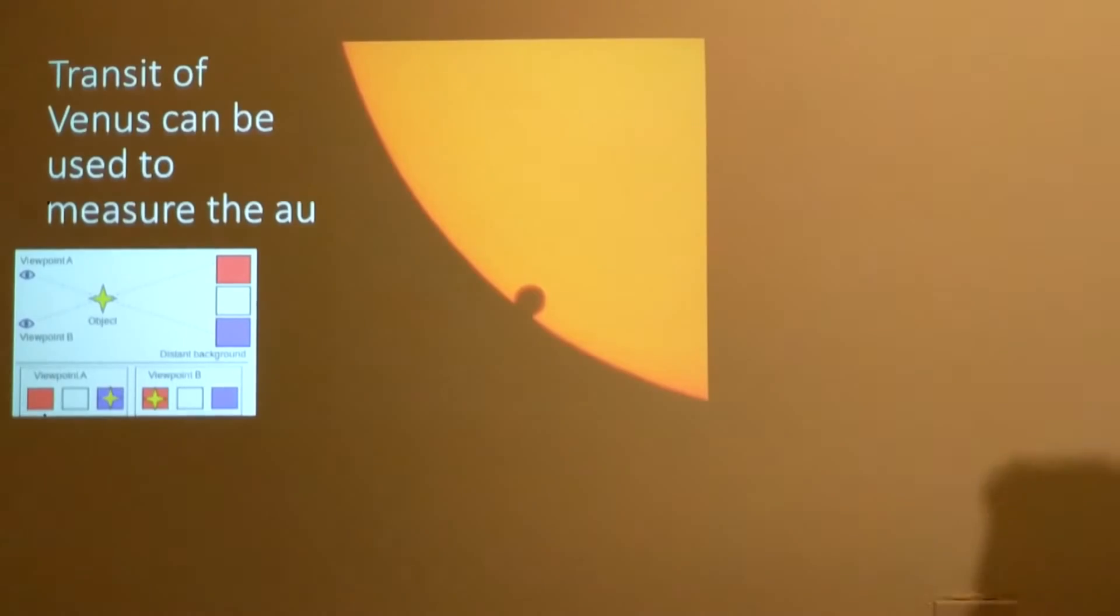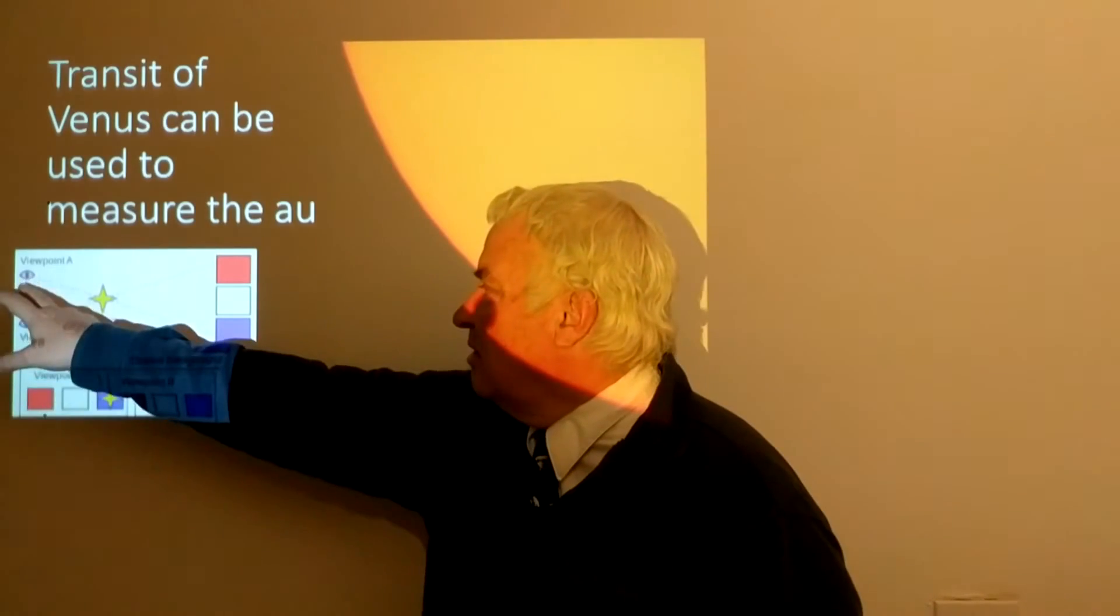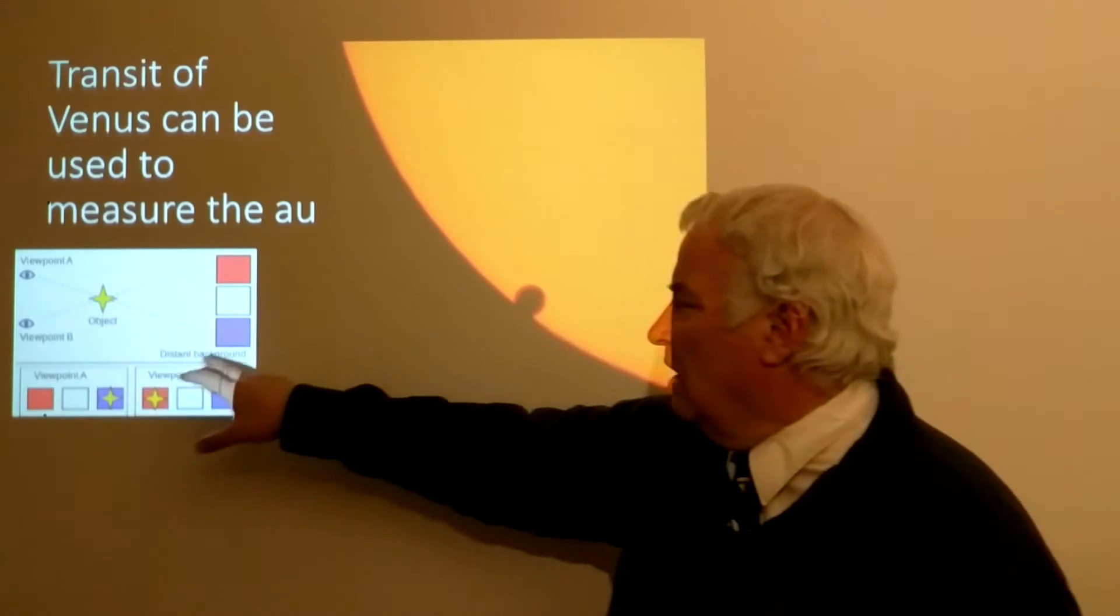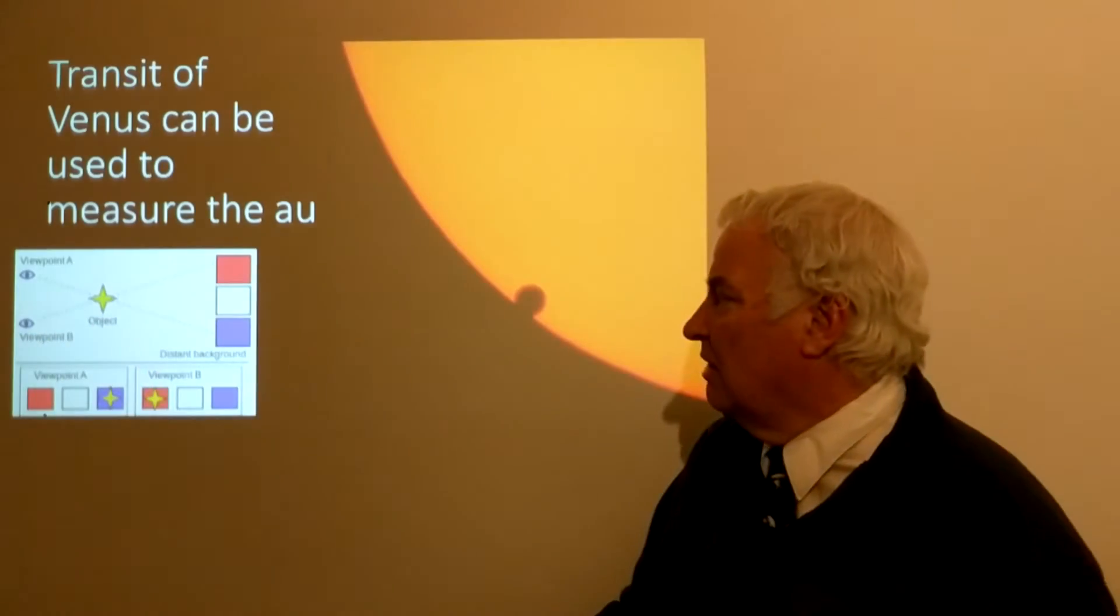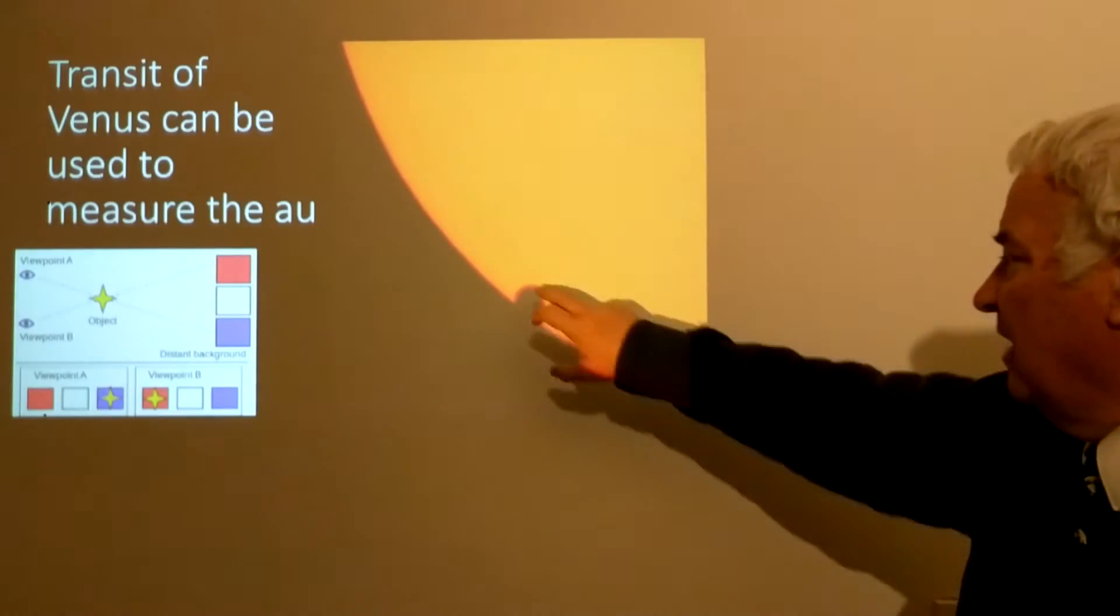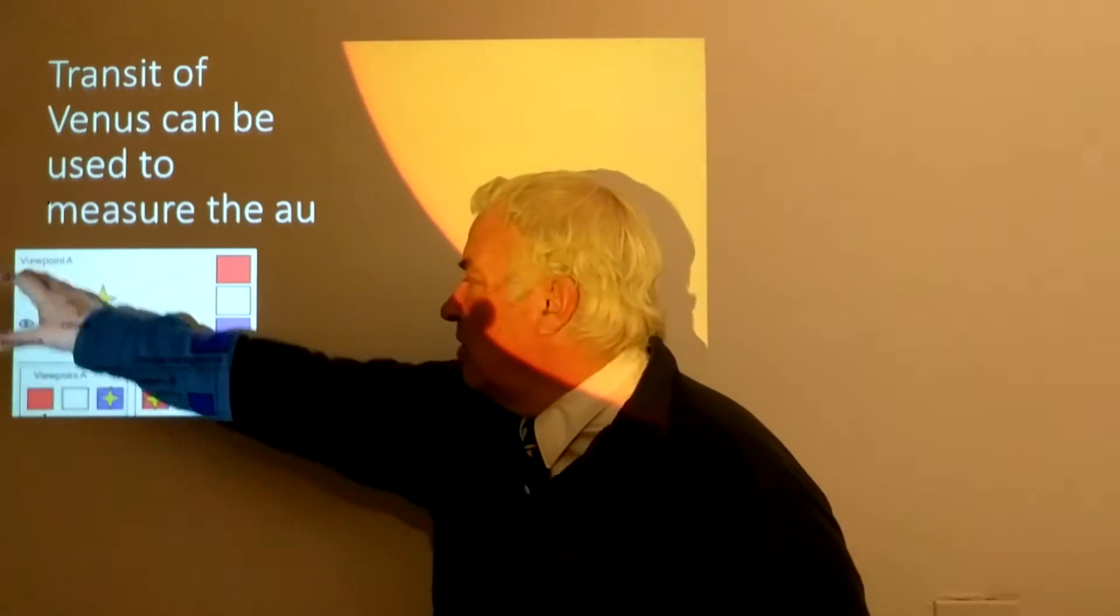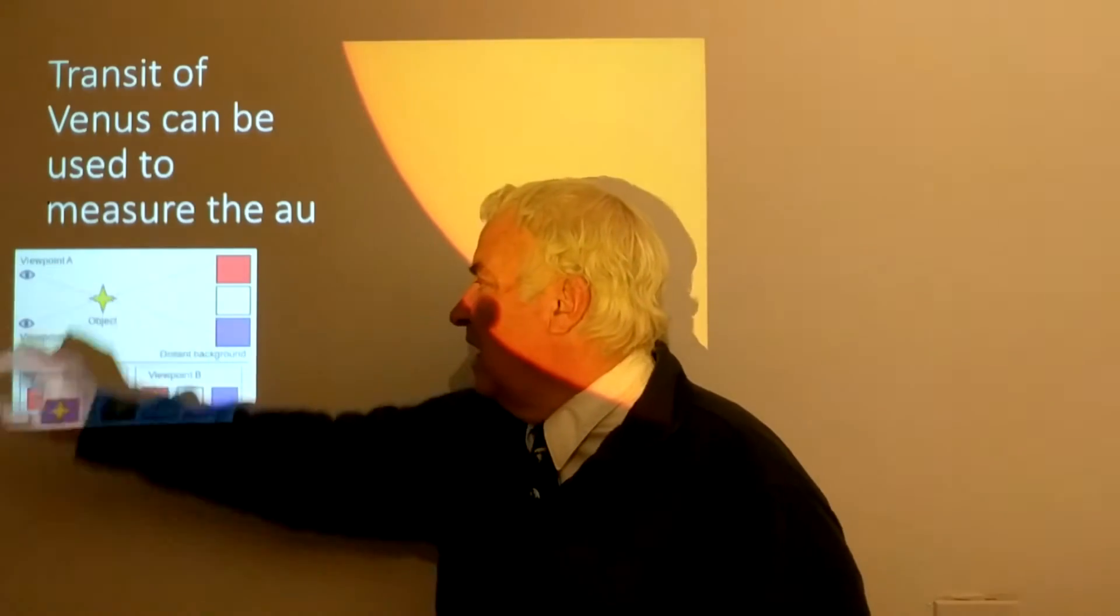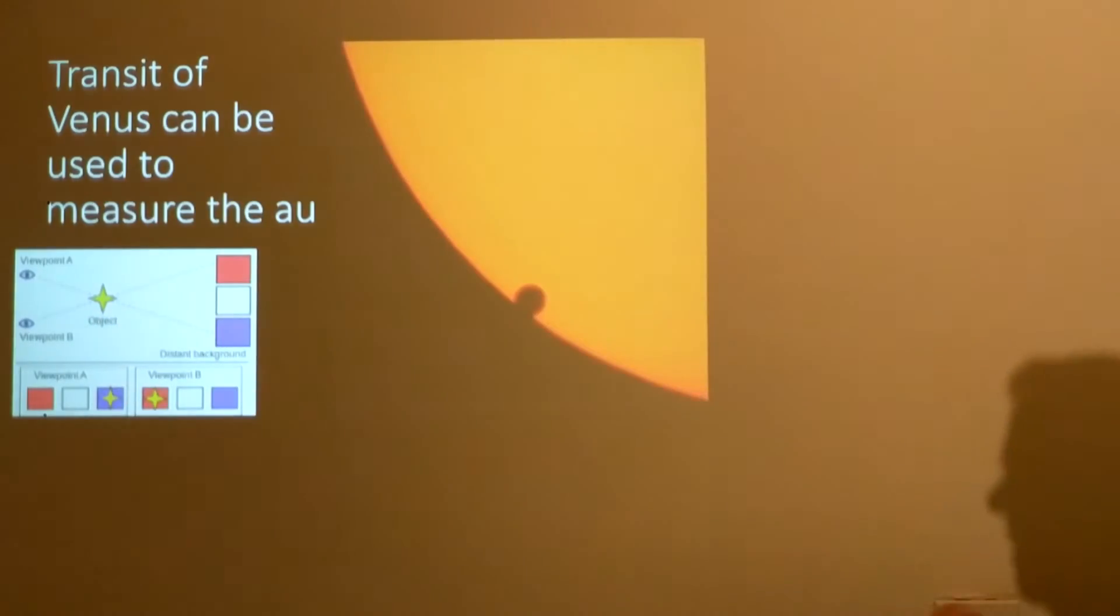If we look at this diagram, if you have one viewpoint and you look at some object it will appear against the blue background, whereas from the other viewpoint it will appear against the red background. Well if we have a transit of Venus, Venus moves in front of the Sun, and it's seen from two different locations on Earth. Then there will be a difference in position which can be determined by the timing of the event, and this has been done and was done to measure the astronomical unit.